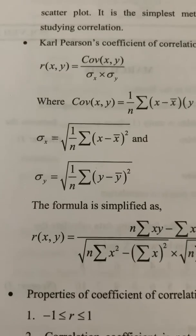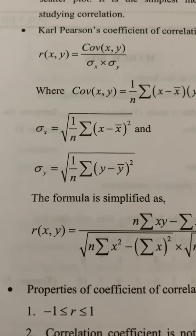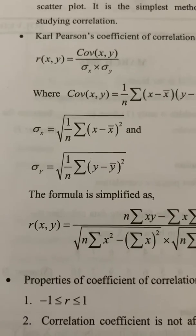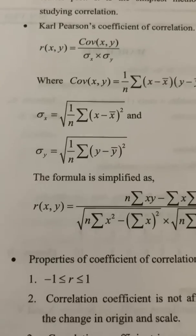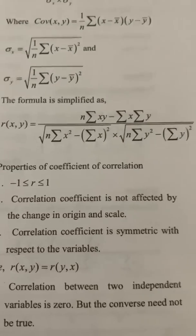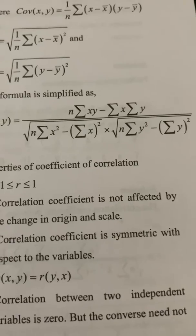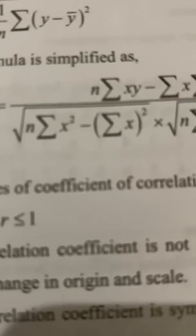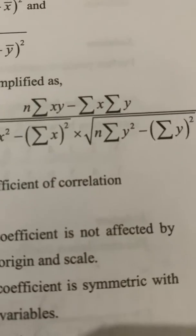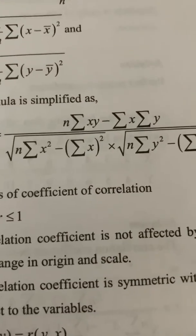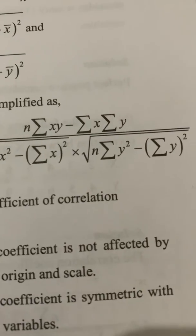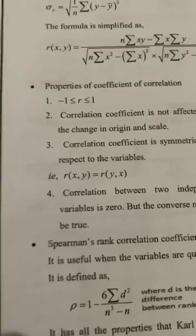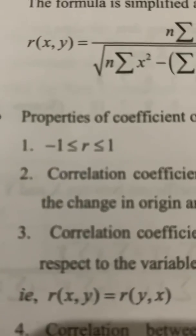Sigma X and Sigma Y are the standard deviations of X and Y respectively. The standard deviation formula uses the root of: 1 over n times sigma x-squared minus x-bar squared. The full Karl Pearson formula is: R(xy) equals n times sigma(xy) minus sigma(x) times sigma(y), divided by the square root of [n times sigma(x-squared) minus (sigma x) squared] into the square root of [n times sigma(y-squared) minus (sigma y) squared]. The value of the correlation coefficient lies between minus 1 and plus 1.